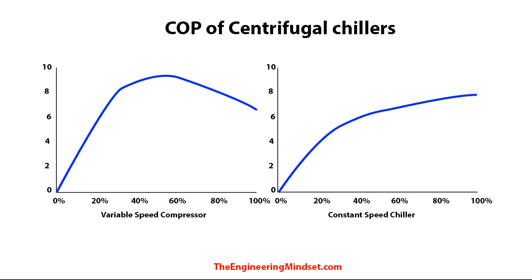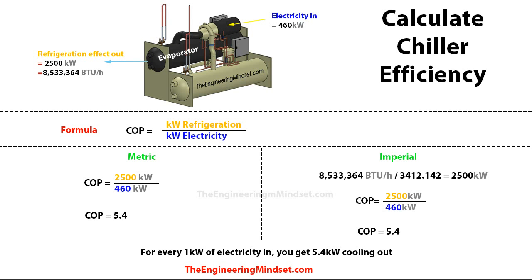So that is the video on how to calculate the coefficient of performance and how efficient your chillers are. Do remember that you can upgrade some of your chillers — if you have a normal office-type building, especially in the northern hemisphere, then you want to consider installing a variable speed drive on your compressor. Speak to your manufacturer or service provider for that. Thank you very much for watching. Please don't forget to like, subscribe and share, and if you have any questions leave them down in the comments section below. Don't forget to check out our website, theengineeringmindset.com.